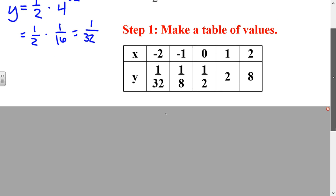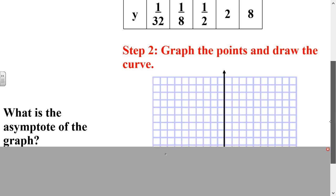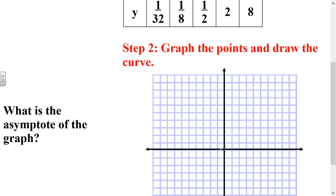We're going to graph the points and draw a curve. We have the point negative 2, one-thirty-second — that's going to be really close to 0 but not actually touching it. Then negative 1, one-eighth — a little higher but not much. Then 0, one-half — a little higher than that. Then 1, 2 and 2, 8. You can see it jumped pretty fast right there.